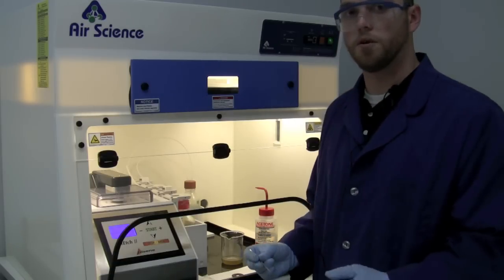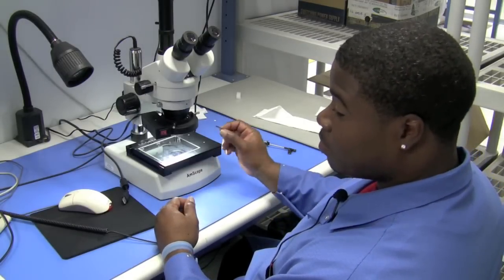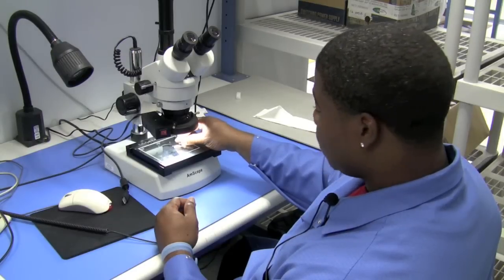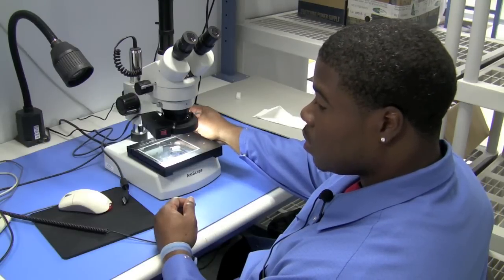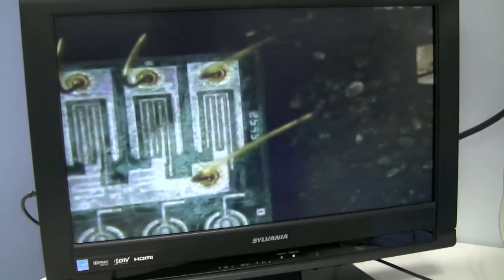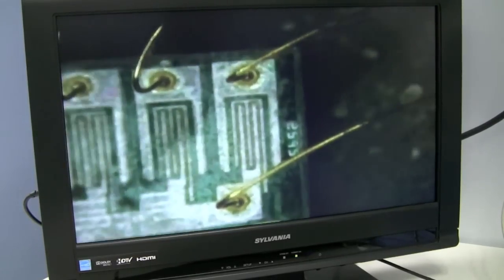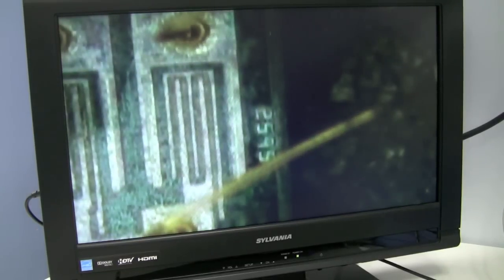And we'll go check on the microscope how we've done. After we've completed our decapsulation process, we bring the part over to our microscope station. We place it on the tray on the microscope, locate the die on the part. And at this point we search for any part marking information on the die that we can verify matches the exterior part marking, i.e. logos, part numbers, and things of that nature.